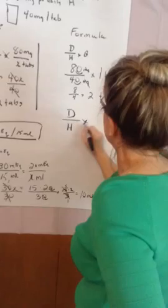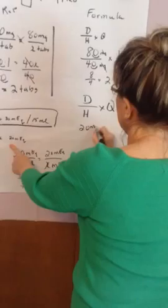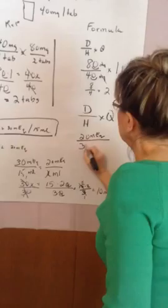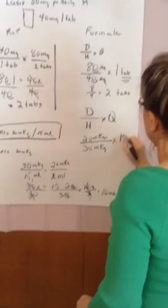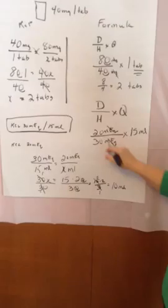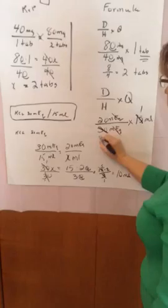If we were doing the formula, it's D over H times Q. Desired, he has ordered 20 milliequivalents over what's on hand is 30 milliequivalents times our quantity, which is 15 mils. We know we've set it up right because our answer is going to be in mils. Those cross out. Well, 15 goes into 30 twice.